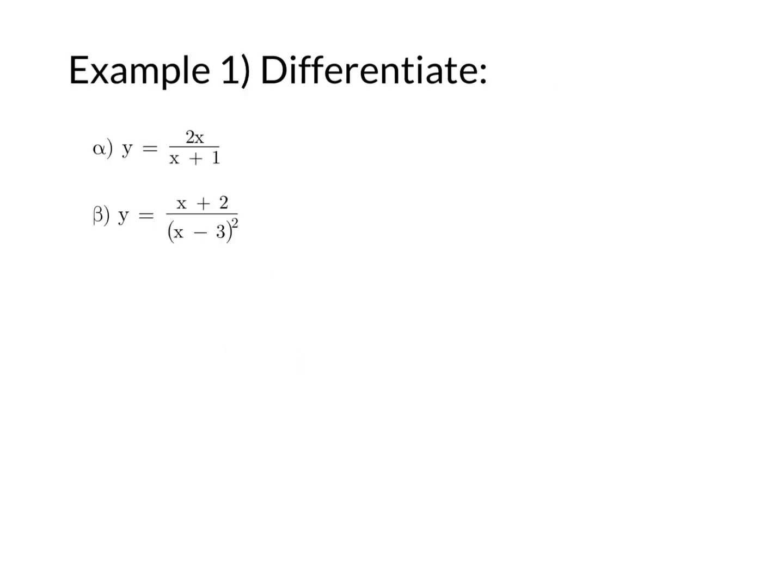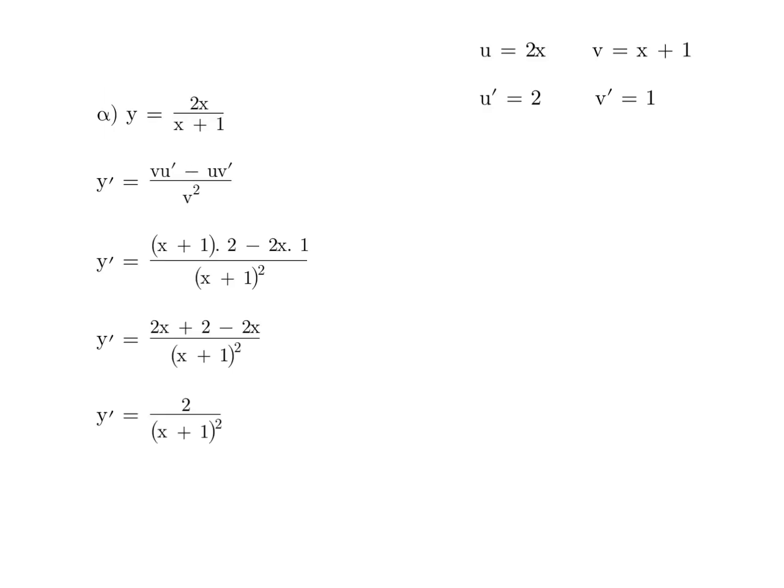Let's have a look at some examples. We'll differentiate some functions, 2x over x plus 1 and x plus 2 over x minus 3 squared. As with the product rule, the suggestion is that off to the side, you let u equal the numerator and v equal the denominator.